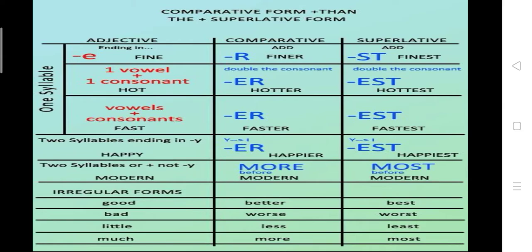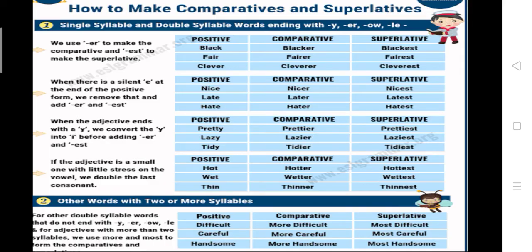There are some other cases for two-syllabic or disyllabic words where we simply add ER and EST. We will discuss those cases. There are also irregular forms: good/better/best, bad/worse/worst, little/less/least, much/more/most. You need to remember them as they are, because they don't follow the same formation rules we have done earlier.